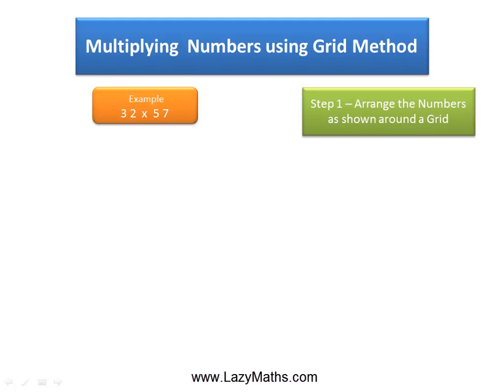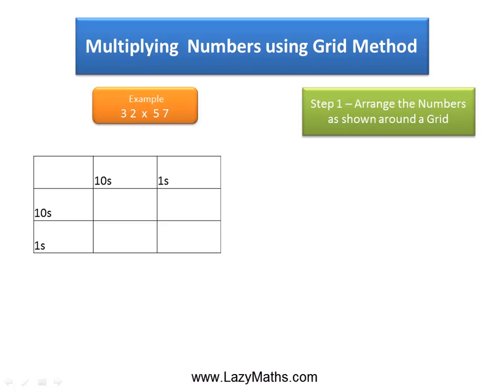The first step is to arrange these numbers in a grid as shown. We have the 3 of 32 in the tens place and the 2 of 32 in the ones place. We have the 5 of 57 in the tens place and the 7 of 57 in the ones place.